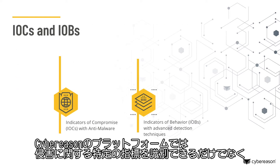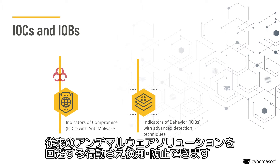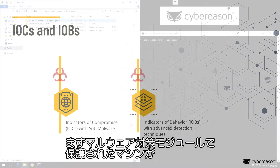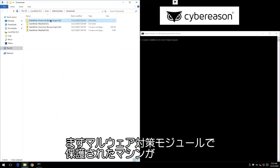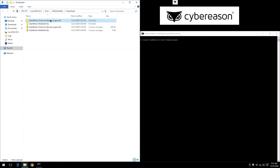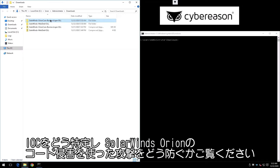The Cybereason platform can identify specific indicators of compromise, as well as detect and prevent more nuanced behaviors that may evade traditional anti-malware solutions. First, let's see how a machine protected by Cybereason's anti-malware module can identify indicators of compromise and prevent the attacks associated with the SolarWinds Orion code compromise.